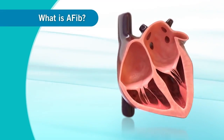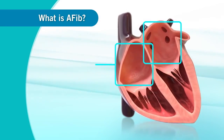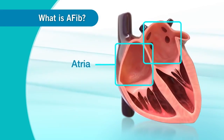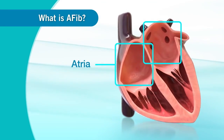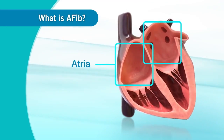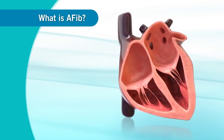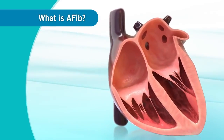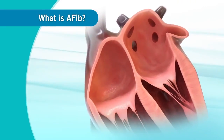In AFib, the top two chambers of the heart, or atria, beat very fast and in an irregular pattern that is out of rhythm. Notice how the atria appear to quiver and are uncoordinated.